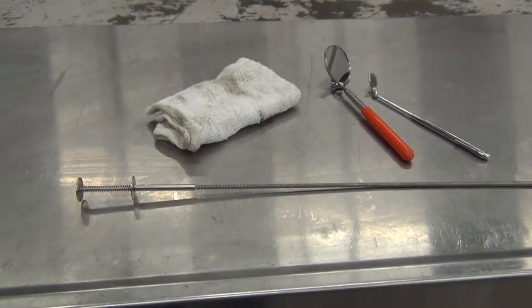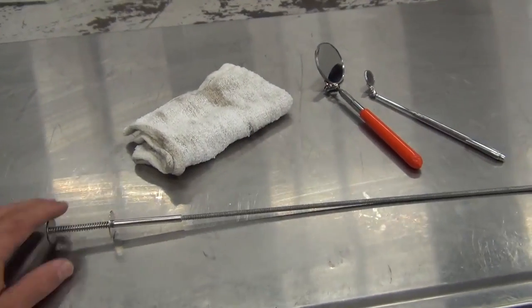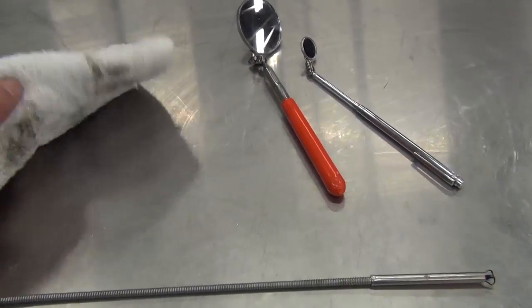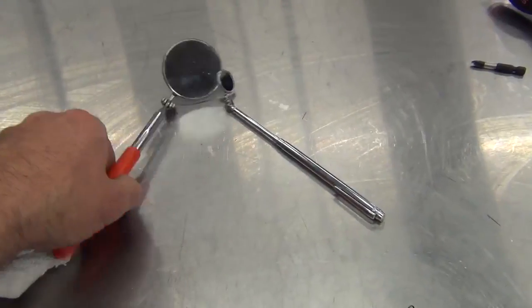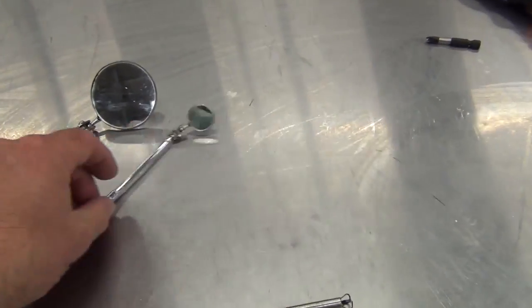Most control cable deterioration can be found by visual means. Use of inspection mirrors, flashlights, and a cloth make this job easier.